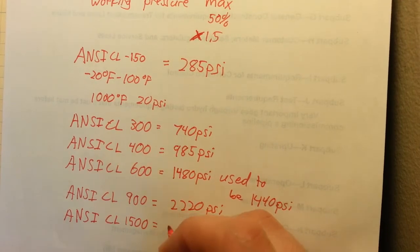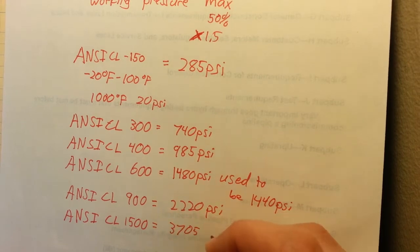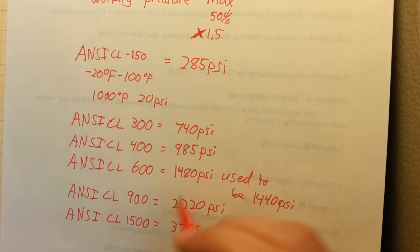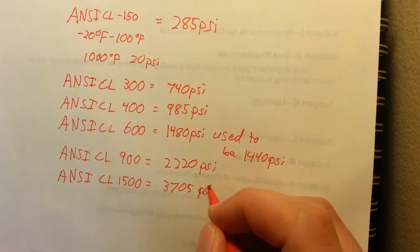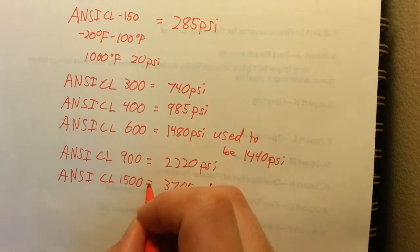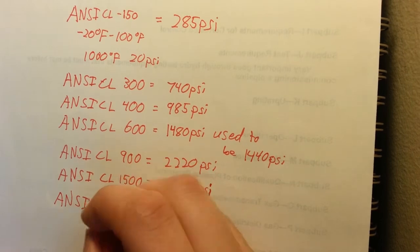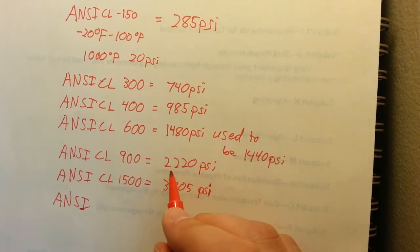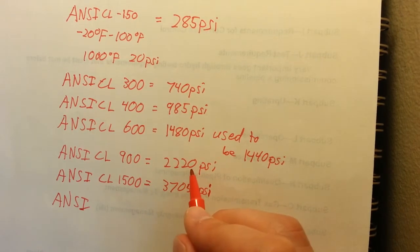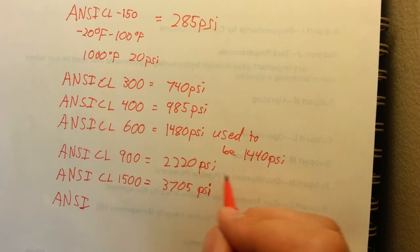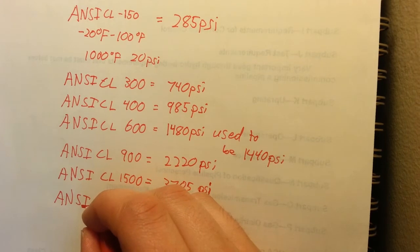ANSI class 1500 is the next one. That's 3705 PSI. ANSI class 1500 is actually the highest I've ever installed or used. And that was for a natural gas storage well. I think it was just above this ANSI class 900 rating of 2220 PSI. I think it was like 2400 or 2500, so we had to go with the ANSI class 1500 on that.